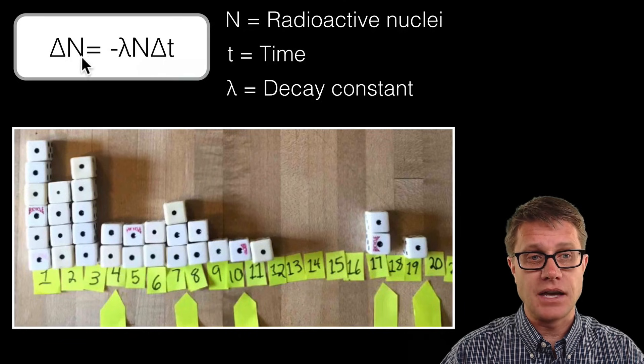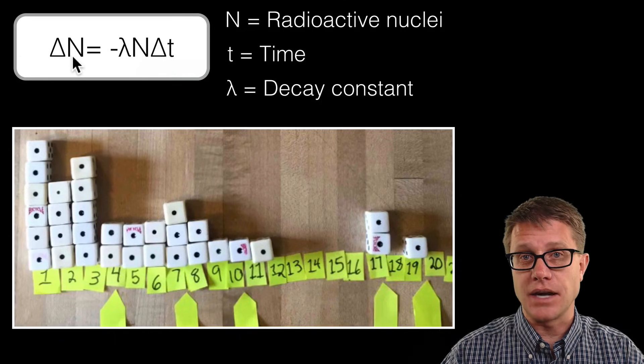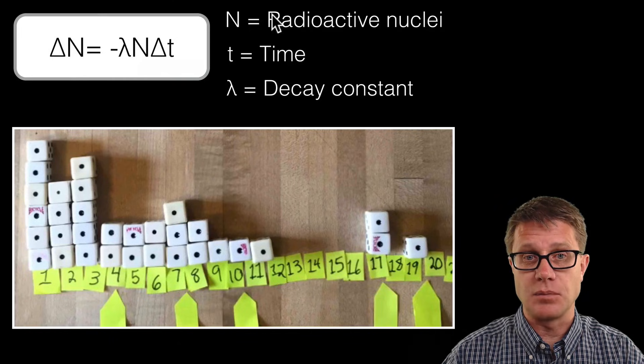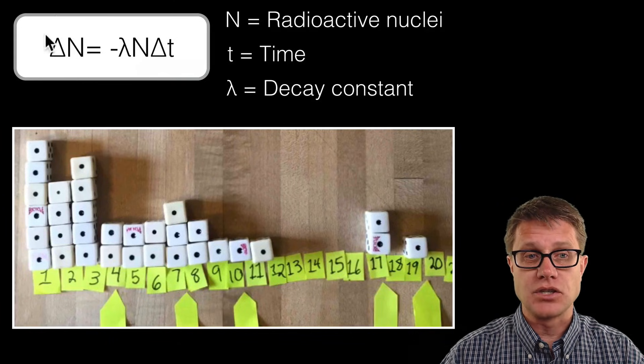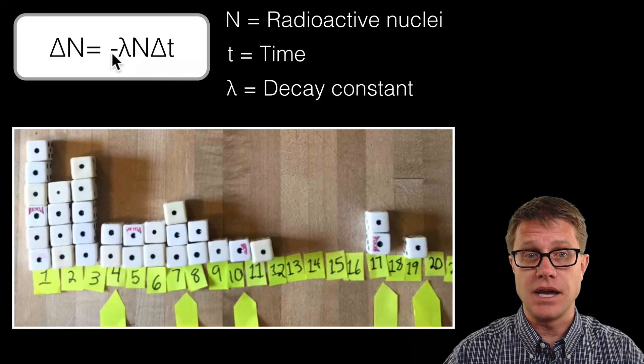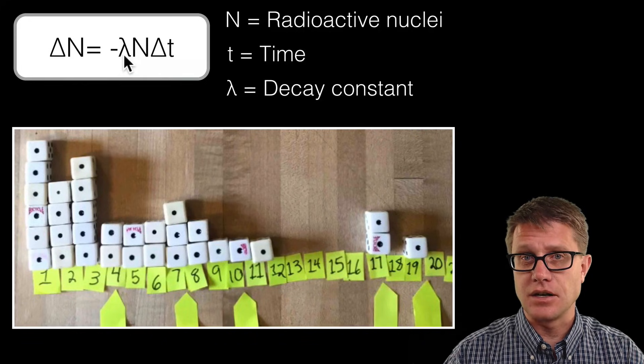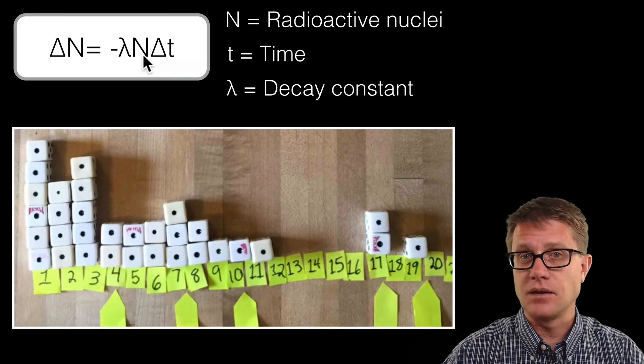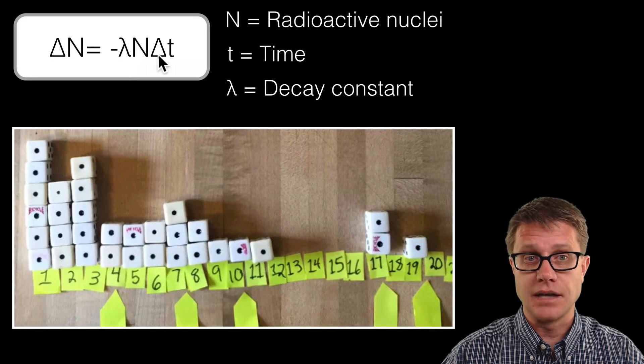And so delta N, which is the change in the radioactive nuclei—so N is going to be our radioactive nuclei. The change in N is minus, because we are losing those nuclei, so negative λ, which is the decay constant—I will get to that in a second—times N, which is the number of radioactive nuclei, times delta t, which is time.